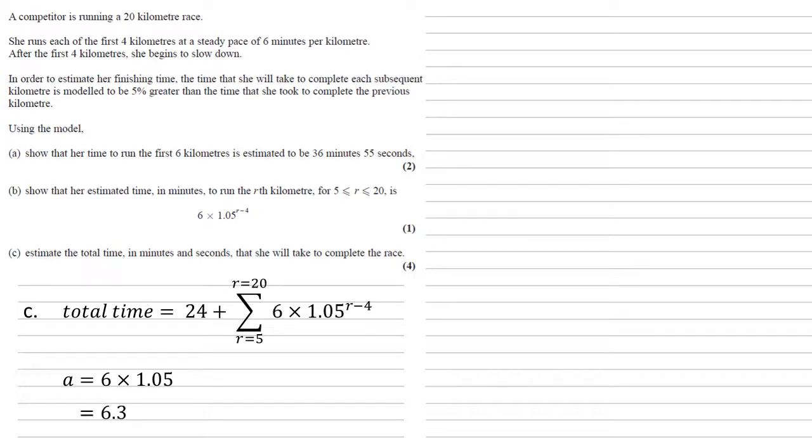So to sum it now, we do the first term 6.3 times by the ratio to our highest power, so 20 - 4 = 16, take away one, all over the ratio 1.05 - 1, which gives us 149.04 minutes.